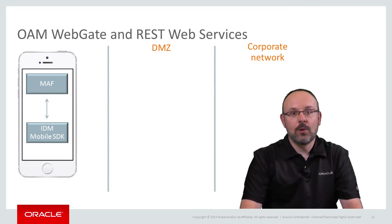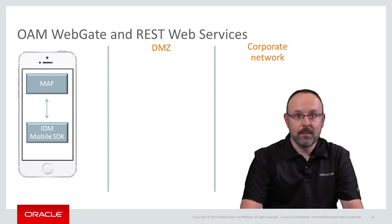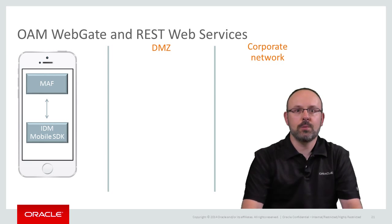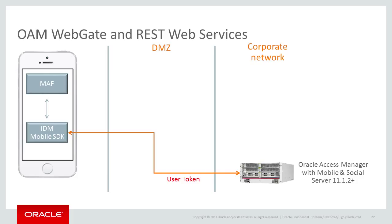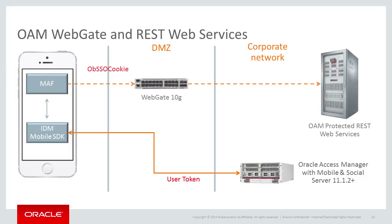REST web services use the HTTP protocol exclusively. This means you can gain SSO for your web services by using infrastructure meant to support web applications. In this scenario, authentication is handled by OAMMS integrated with Oracle Access Manager. Thus, the login server connection inside the MAF application is of the mobile and social type. Once the user has been authenticated, OAMMS returns an OAM user token. Oracle WebGate is a component of the Oracle IDM stack which intercepts HTTP requests and will reroute them to Oracle Access Manager if authentication is required.